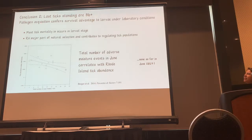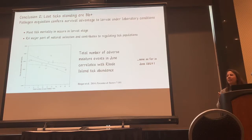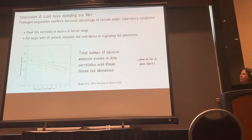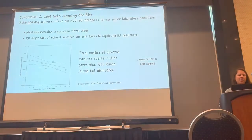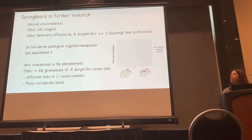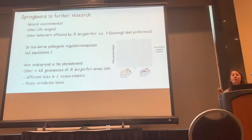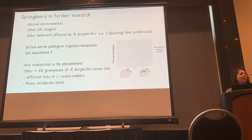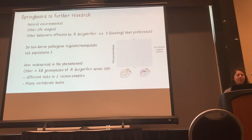Even though most attention has been on nymphal populations, larval populations are the ones most heavily selected — most of the mortality occurring in ticks happens in that first life stage. Really only 1% of ticks that are born end up reproducing. Relative humidity is a major part of that. Hopefully we can look at this in more natural environments, and we're interested to see if this effect continues in the nymphal and adult stages, and what other behaviors Borrelia burgdorferi might be affecting beyond feeding behaviors — could it be impacting questing behavior? That would be a very interesting topic.